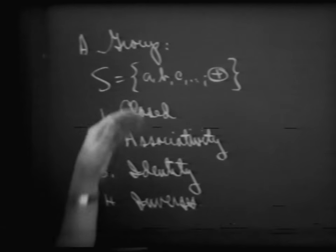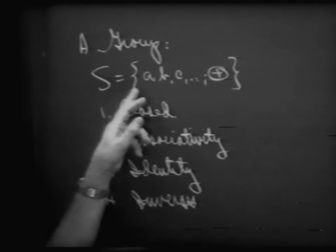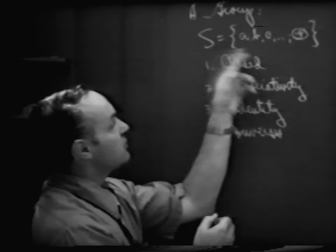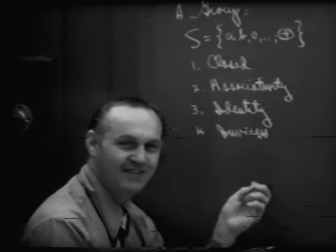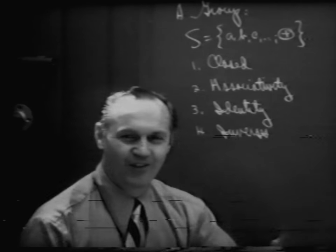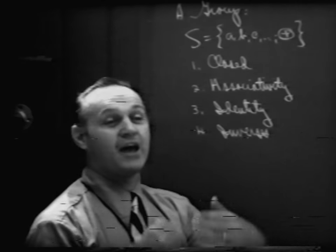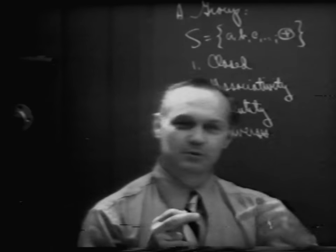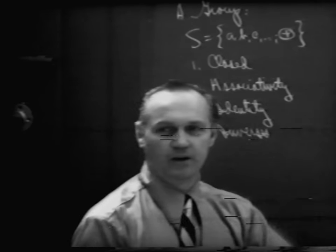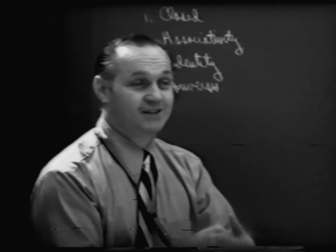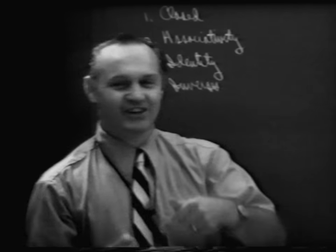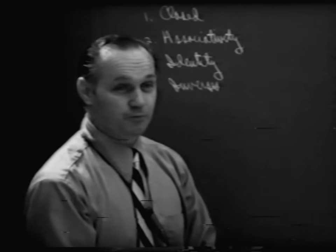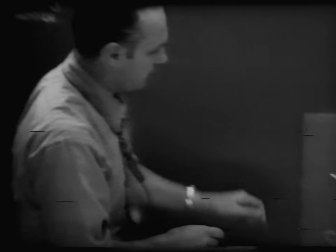We have these four properties over some set S of elements with one operation. And when we have this kind of a set of elements with that operation and these four properties, then we call that axiomatic system a group. What I'd like to do today is to look at a particular example of a set of elements and ask ourselves: does this set satisfy all of these properties of a group? Let's look at this model I've constructed here.